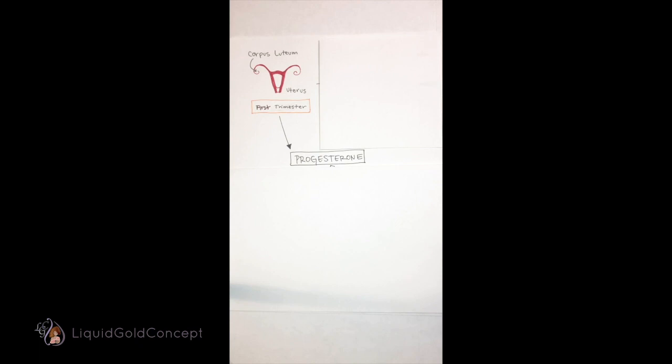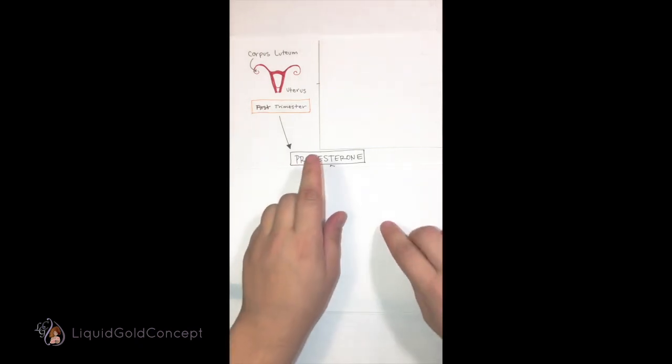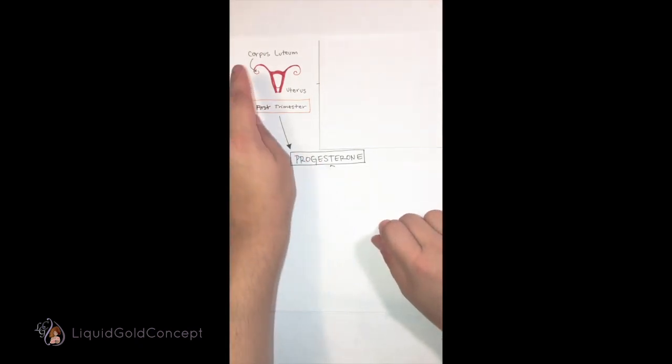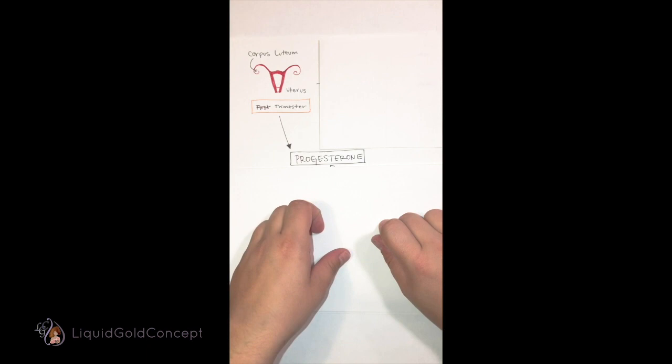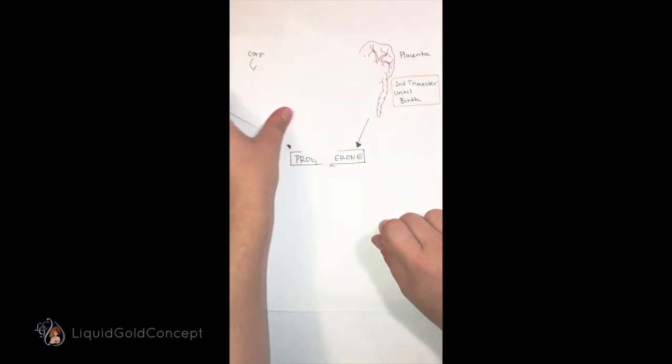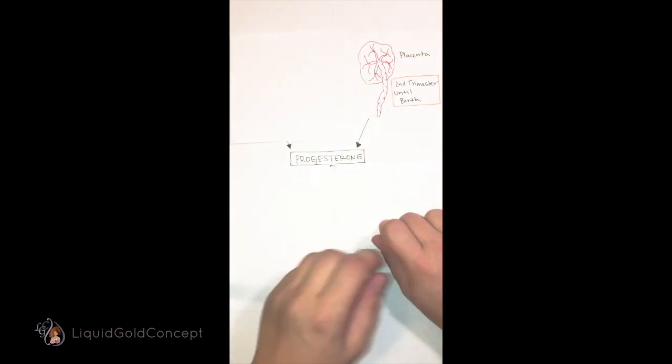During pregnancy, in the first trimester, the hormone progesterone is produced by the corpus luteum in the ovary. Eventually, around the second trimester, the placenta takes over progesterone production until birth.